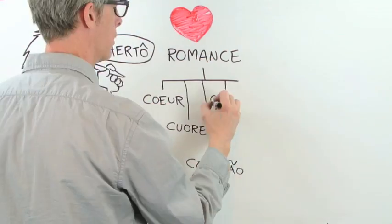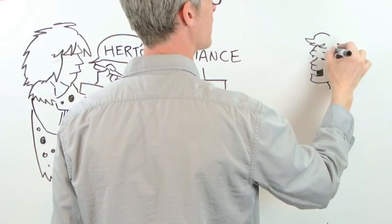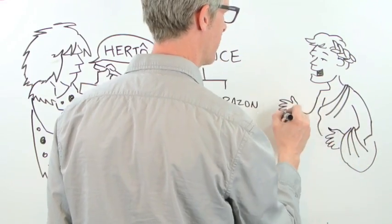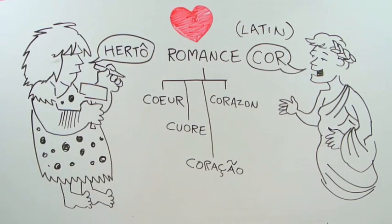In the case of French's language family, the Romance languages, we already know what the ancestor language looked like. It was Latin.